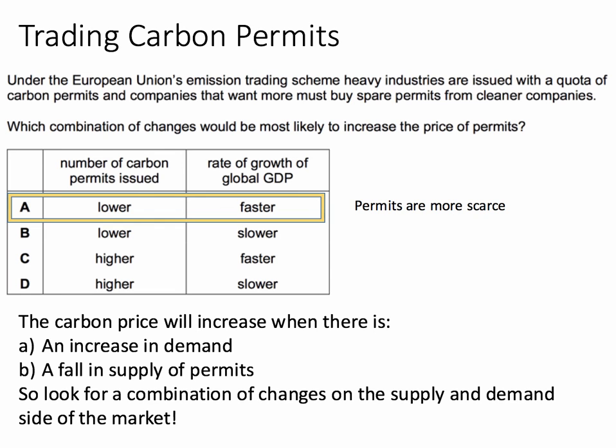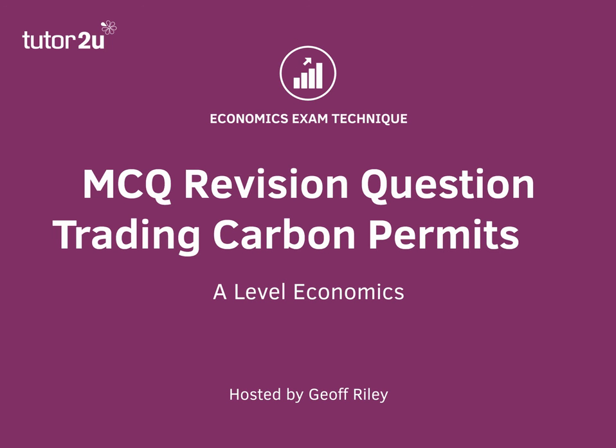Equally, when the rate of growth of global GDP is increasing — global output if you like — cement, energy, and construction companies will be expanding, and therefore, other things being equal, there will be an increase in carbon emissions. So there'll be a greater demand for carbon permits. The number of permits being issued is lower because of the fall in the quota, and the growth of GDP increases demand. Both of those factors in theory should increase the price of the permit. We're not asked to evaluate in this question — we're just asked to use simple supply and demand economics for the answer.